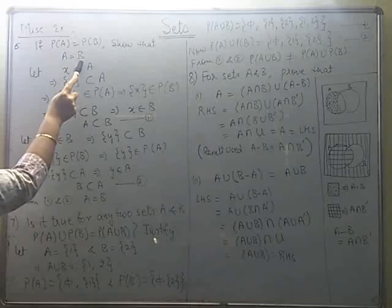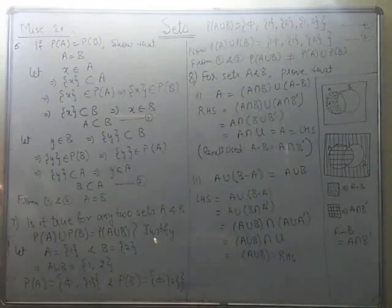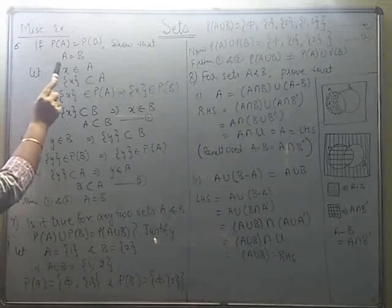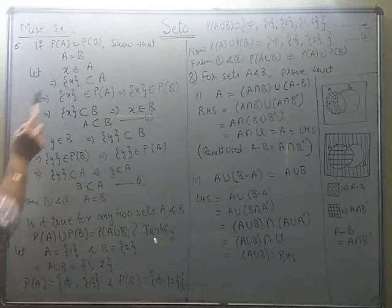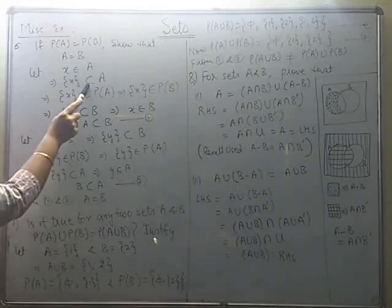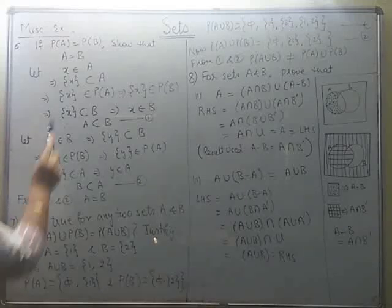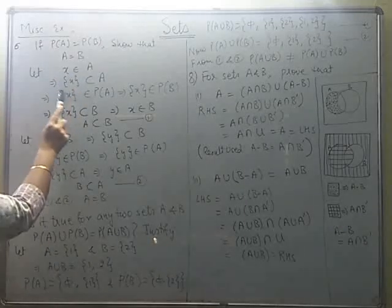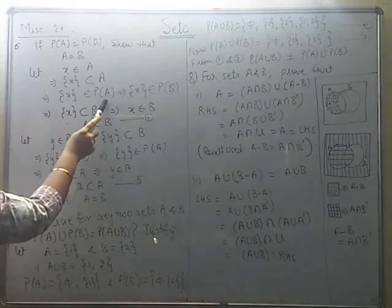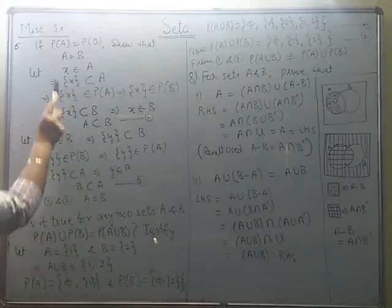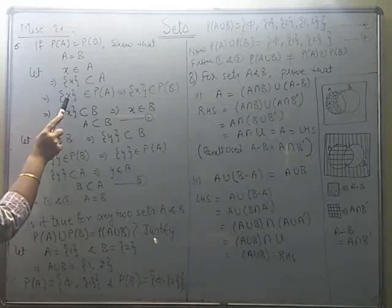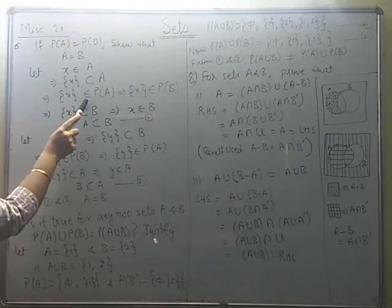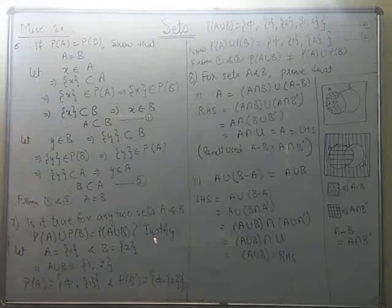I will show A is a subset of B, and B is also a subset of A, then they both will become equal. Starting from the elements of A: suppose x belongs to A, that means x is an element of A. So the set containing x will be a subset of A. Where do the subsets of A get written? They are written in the power set of A. So this subset of A will be an element of power set of A — we write {x} belongs to power set of A.